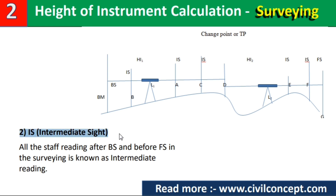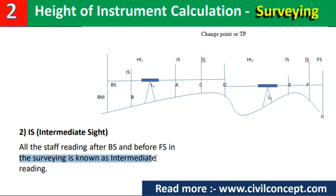Point number two is intermediate sight (IS). All staff readings taken after BS and before FS in surveying are known as intermediate readings. The first reading of the staff is our backsight, the last reading is our foresight (FS), and the middle readings of the staff are known as intermediate sight (IS).